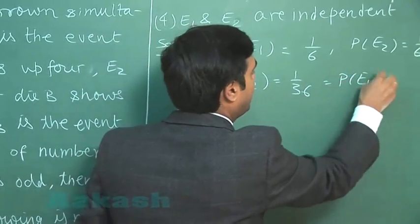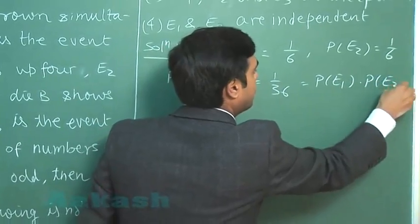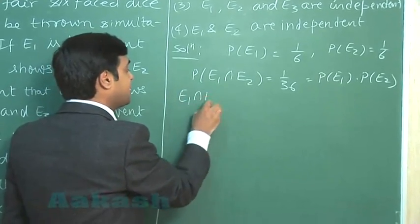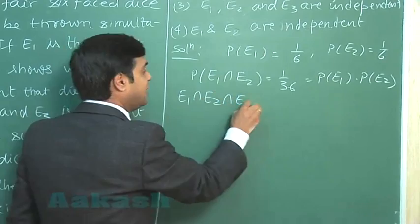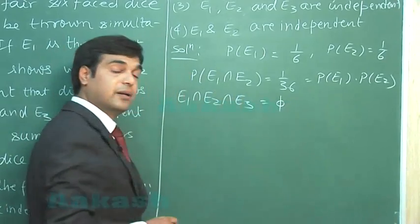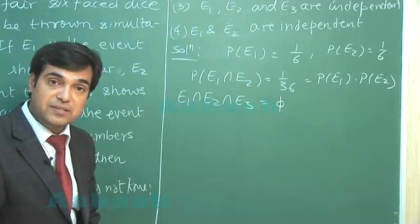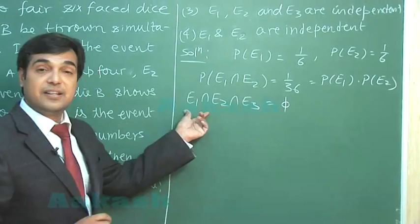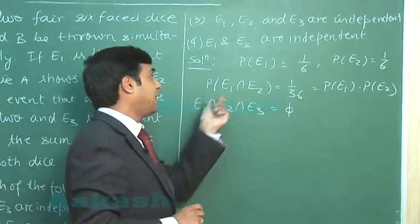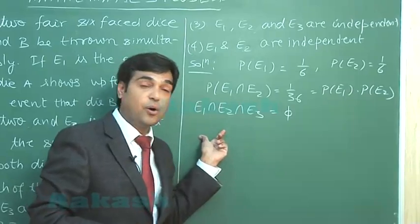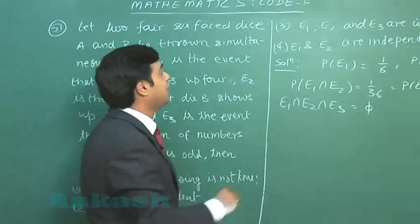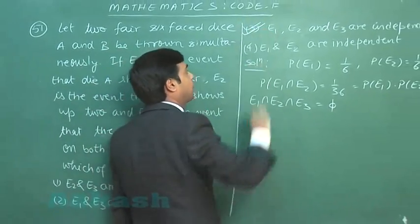So clearly we can see the product P(E1)P(E2) is equal to the intersection of the two, so these two events are independent. Now when I talk about E1 intersection E2 intersection E3, it is a null set. So the product of probabilities should be zero if the events are independent, but it is not the case because we see that E1, E2, E3 are nonzero. So clearly we can see here that option 3 is not true.